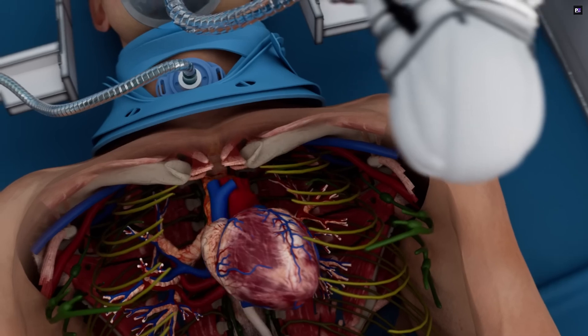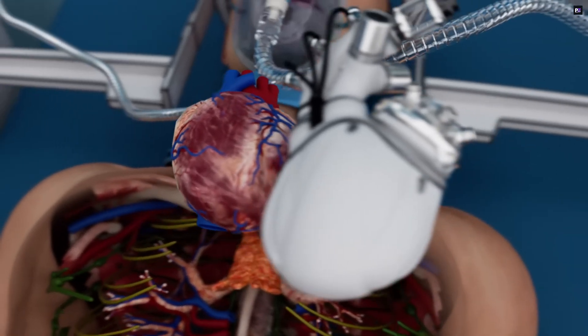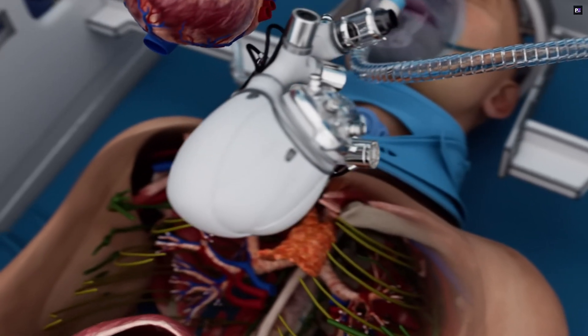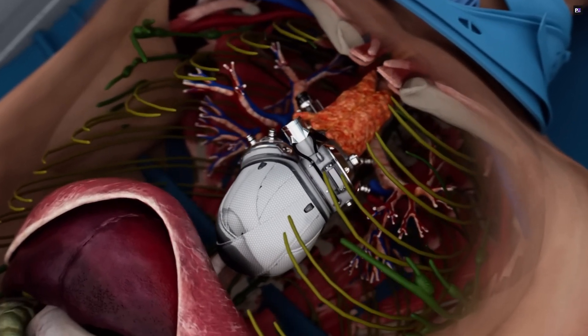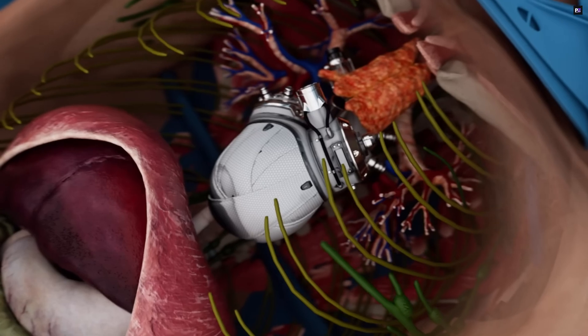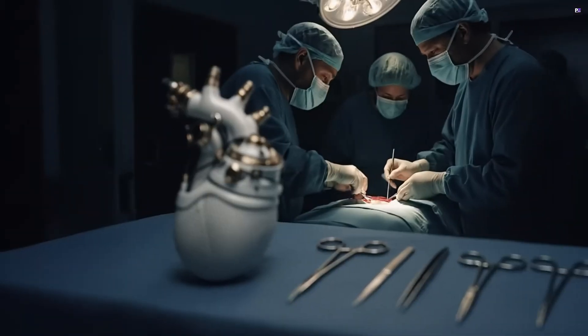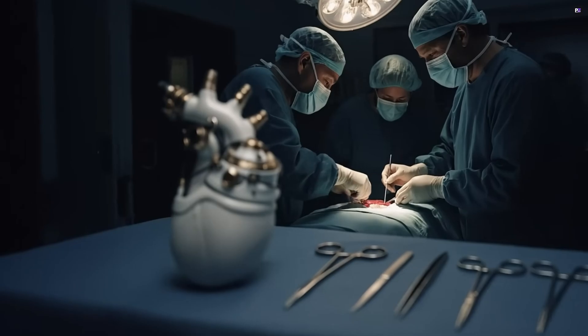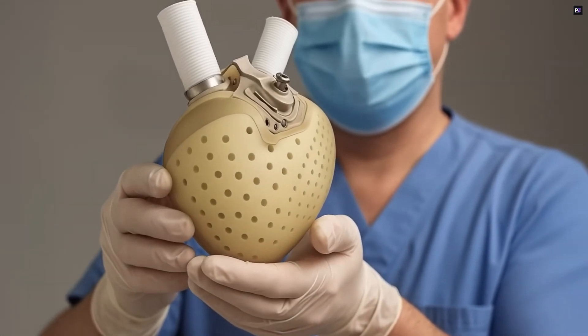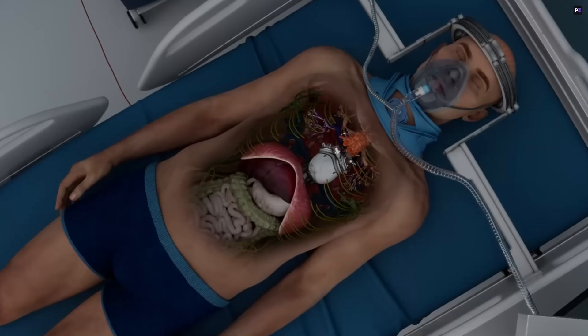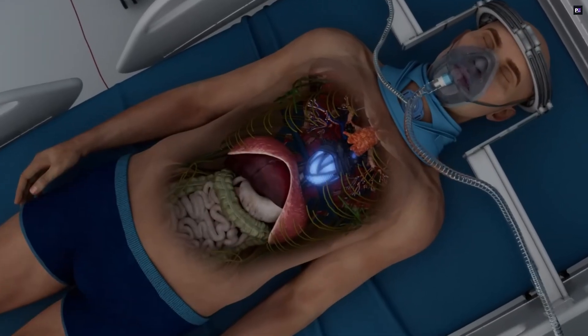What makes the Bivacor TAH so remarkable is its simplicity. It has just one moving part. This magnetically levitated rotor efficiently takes over the function of both natural ventricles, maintaining a consistent and natural blood flow throughout the body. It's incredibly powerful, capable of pumping up to 12 liters of blood per minute, and smartly adjusts its output to meet the body's demands, whether you're at rest or active.